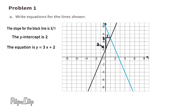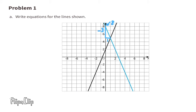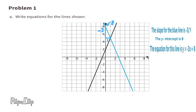Now let's take a look at the blue line. It looks like the blue line intersects the y-axis at 8, and the slope is down 3 and to the right 1. So it has a negative 3 slope and a y-intercept of 8. The equation for the blue line is y equals negative 3x plus 8.